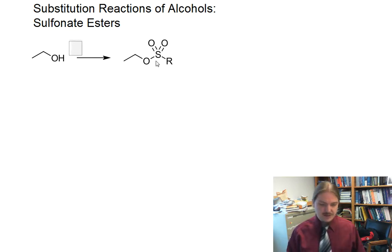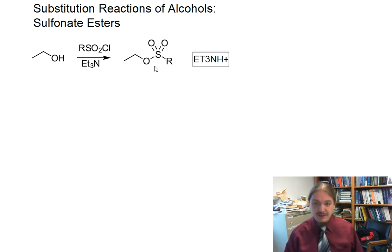The type of reaction used to put these groups on uses a sulfonyl chloride, where it's going to be connected to the alcohol via a chloride atom. Some appropriate base, usually amine bases, are used, like triethylamine or pyridine. The purpose of the triethylamine is to absorb any acid that might form from this reaction. The other product is triethylammonium chloride.